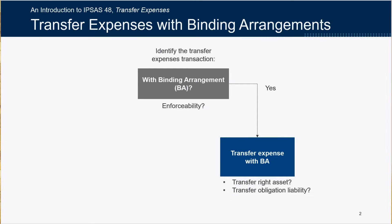To operationalize the principle, the IPSASB decided to leverage the revenue standard and incorporate the concept of a binding arrangement into the transfer expenses standard. A binding arrangement is an arrangement that confers both rights and obligations that are enforceable either legally or through equivalent means on the parties within the arrangement. In the context of transfer expenses, if the transaction arose from a binding arrangement, the enforceable right from that binding arrangement would meet the definition of an asset. After transferring the resources in accordance with the arrangement, the transfer provider would recognize the transfer right asset, and this asset would be expensed when or as the enforceable right is extinguished.